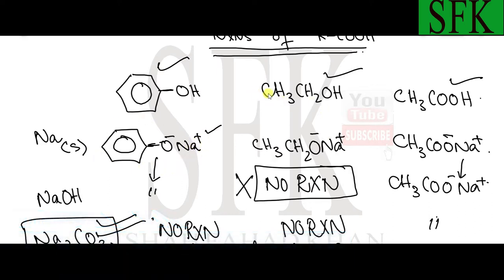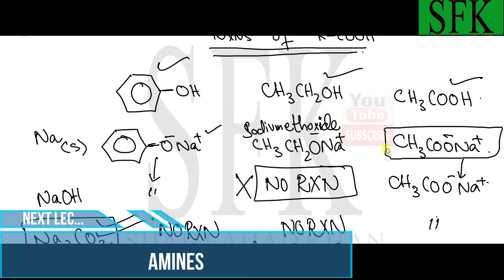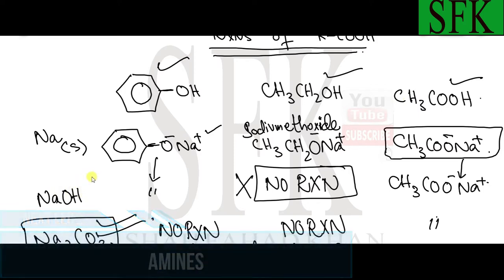With ethanol, the product is sodium ethoxide — not sodium ethanoate. People often confuse these two. Sodium ethanoate is the salt of ethanoic acid, not the salt of ethanol. Sodium ethoxide is the salt of ethanol. The third salt we get is sodium ethanoate, formed from ethanoic acid reacting with sodium metal.